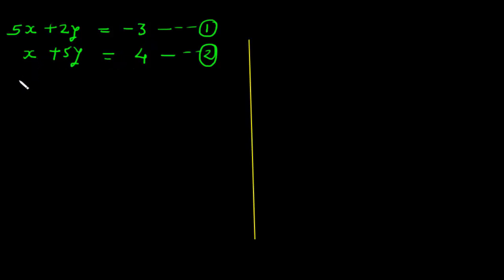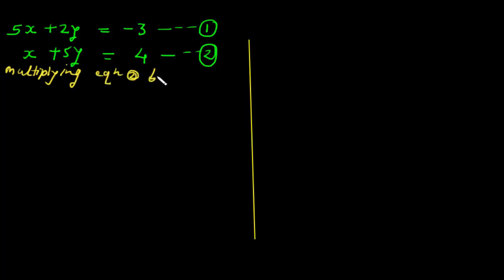So let's multiply equation 2 by 5. Multiplying equation 2 by 5, we get 5x plus 25y is equal to 20.